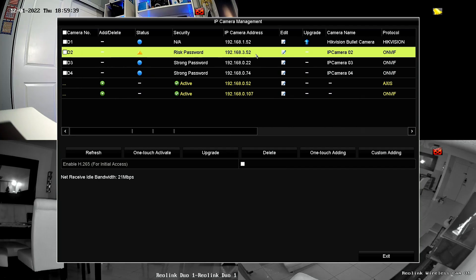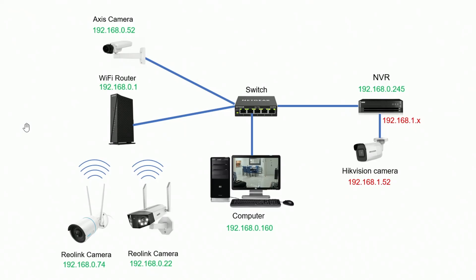Let's understand this better, and you can see later this camera working when I fix the problem. Here in the diagram I can show you what I have. Here's the NVR with the IP 192.168.0.245 — let's call that network zero. And the NVR has a second network, 192.168.1.something.